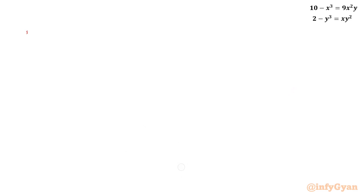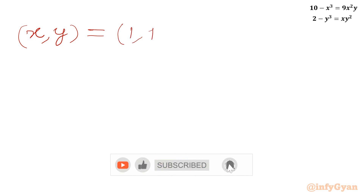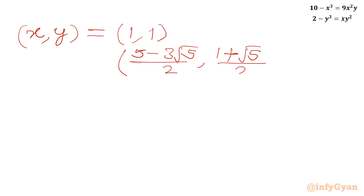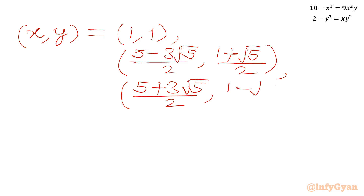So our final answers for the ordered pairs (x, y) are: first, (1, 1); second, ((5 minus 3√5)/2, (1 plus √5)/2); and third, ((5 plus 3√5)/2, (1 minus √5)/2). I hope you liked this video — thank you very much for watching.